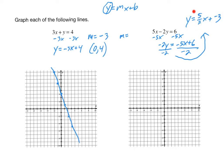Negative 5x divided by negative 2 gives us positive 5 halves x — we can't reduce 5 halves, and negative divided by negative is positive. Then negative 2 divides into 6, giving us negative 3. So this is now in mx plus b form: the slope is 5 halves, and the y-intercept comes from the b value, which is (0, negative 3).